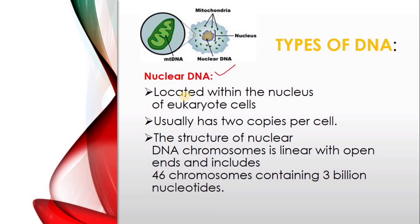Nuclear DNA is located within the nucleus of eukaryotic cells. It usually has two copies per cell. The structure of nuclear DNA chromosomes is linear — linear with open ends, including 46 chromosomes containing 3 billion nucleotides.